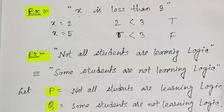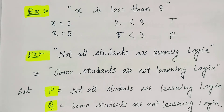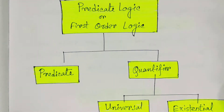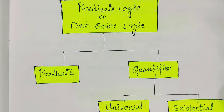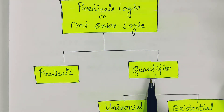Thus, we need a more powerful logic to deal with these types of sentences. Predicate logic is one such logic to handle these problems. To handle the deficiencies of propositional logic, we introduce predicate logic, which has two main parts: one is the predicate, and another is the quantifier. Quantifiers are of two types: the universal quantifier and the existential quantifier.